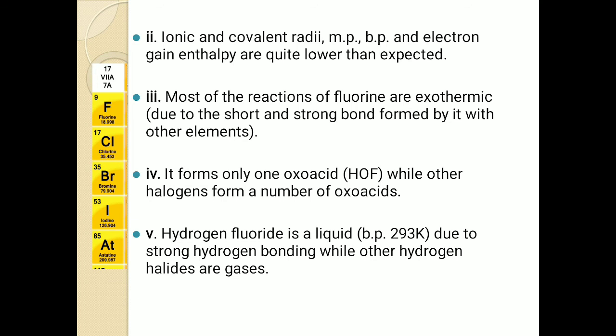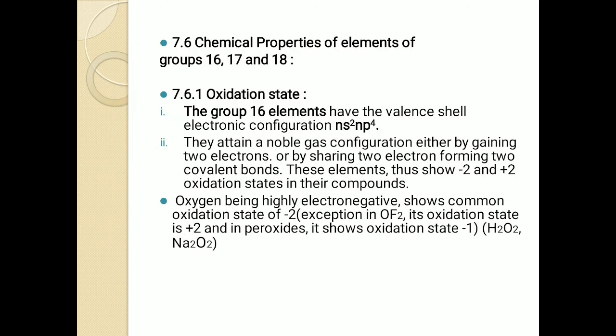So these are the anomalous properties of oxygen and fluorine. In the exam, a question may be asked about what are the anomalous properties, or how fluorine and oxygen differ from the rest of the family members, or what are the reasons why these elements behave anomalously. If the question is for 3 marks, you need to explain about 6 points to get full marks. In the next session, we will see the chemical properties of elements of group 16, 17 and 18.